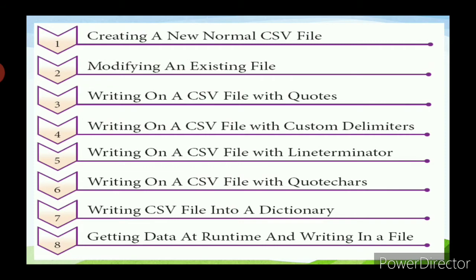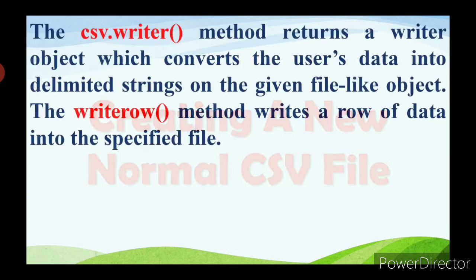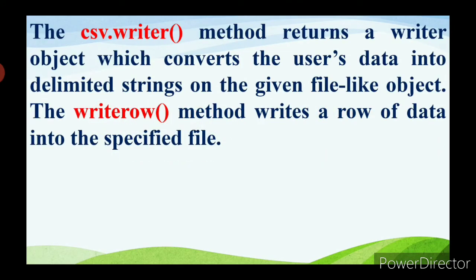The first one is creating a new normal CSV file. The csv.writer method returns a writer object which converts the user's data into delimited strings on the given file-like object. When you have a set of data that you would like to store inside a CSV file, it is time to use the write function. The csv.writer method returns a writer object which converts the user's data into delimited strings on the given file-like object.